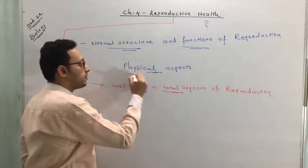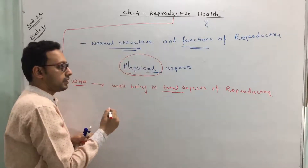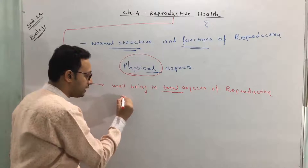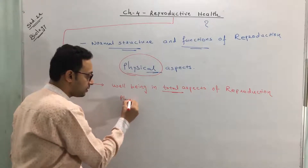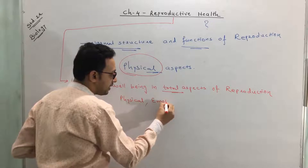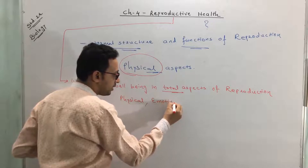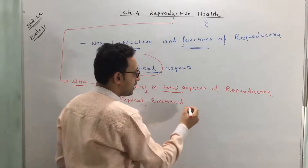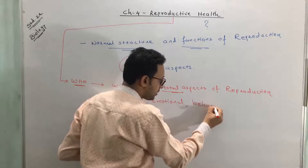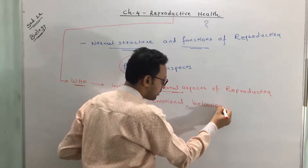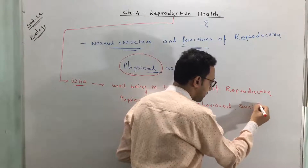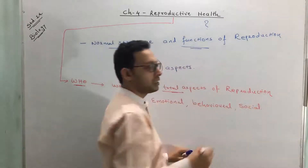In the previous definition we included only the physical aspect, but total aspects means it includes physical aspects, mental or emotional aspects, behavioral aspects, and social aspects.